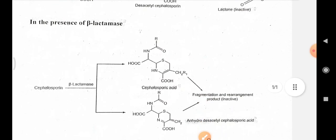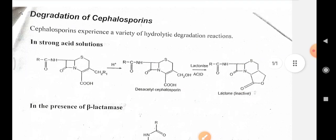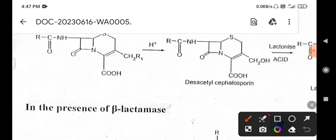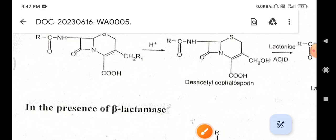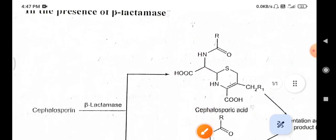The second degradation pathway involves the beta-lactamase enzyme. Beta-lactamase enzymes inactivate beta-lactam antibiotics by hydrolyzing the peptide bond of the beta-lactam ring, which renders the antibiotics ineffective. The beta-lactamase enzyme breaks the beta-lactam ring in the structure of cephalosporin.